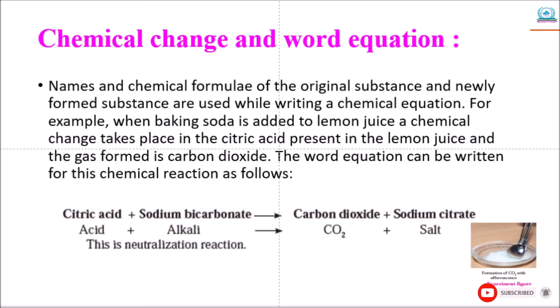And newly formed substances are used while writing a chemical equation. For example, when baking soda is added to lemon juice, a chemical change takes place in the citric acid present in the lemon juice and the gas carbon dioxide is formed. The word equation for this chemical reaction is: citric acid plus sodium bicarbonate gives carbon dioxide and sodium citrate. This is a neutralization reaction.